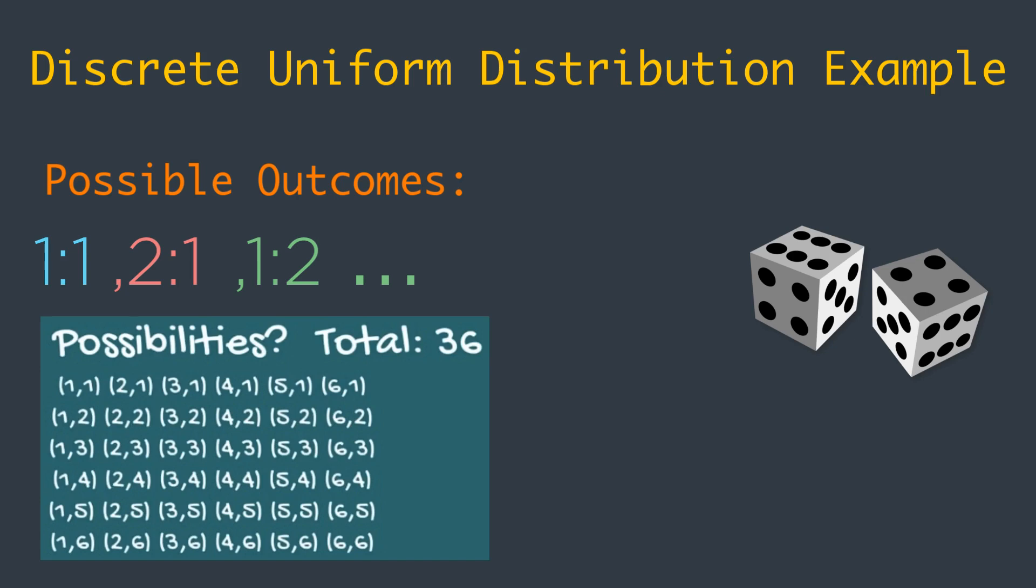Can you guess the probability of getting a sum of 1? It's 0 as this event is impossible. The minimum sum we can get is 2. So what's the probability of getting a sum of 2? There is only one combination that would give us a sum of 2, when both dice are equal to 1. So 1 out of 36 total outcomes, or 0.03.